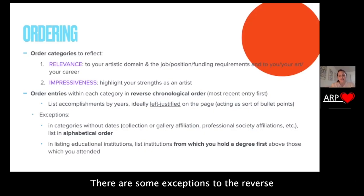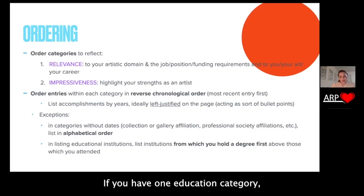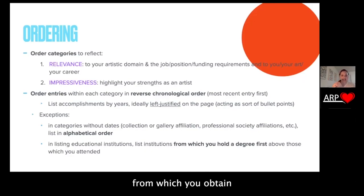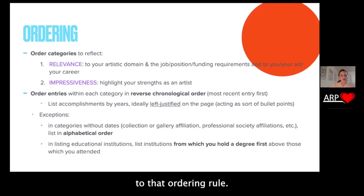There are some exceptions to the reverse chronological order as well. If there are some categories that have no dates, then you'd put them in alphabetical order. In your education section, if you have multiple institutions that you're listing, it's not necessarily going to be in strict reverse chronological order — the institutions from which you obtained degrees would come first, and the ones you maybe just attended, or where it was a seminar and didn't end in a degree, would come next. Those are the two exceptions to that ordering rule. Besides that, always in reverse chronological order.